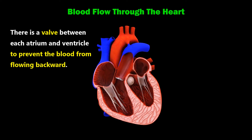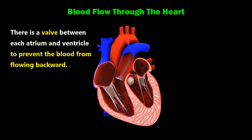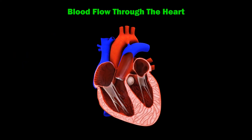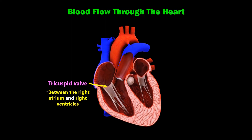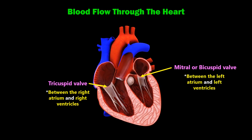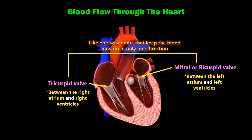There is a valve between each atrium and ventricle to prevent the blood from flowing backward. The valves — the tricuspid valve between the right atrium and right ventricle, and the mitral or bicuspid valve between the left atrium and left ventricle — are like one-way doors that keep the blood moving in only one direction.